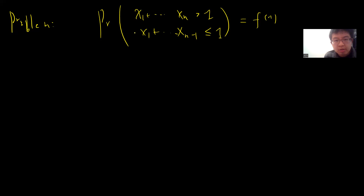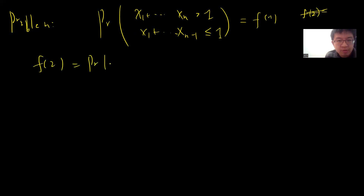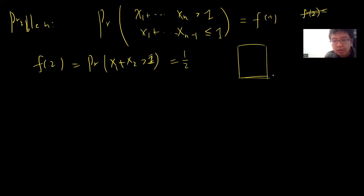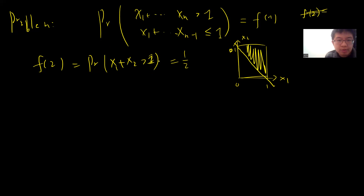At least for n=2, I get f(2) = probability that X1+X2 > 1, which is 1/2. This is easy to compute because X1 and X2 are uniform on [0,1]×[0,1], and we want X1+X2 > 1. That's this region above the diagonal, so the area is 1/2.